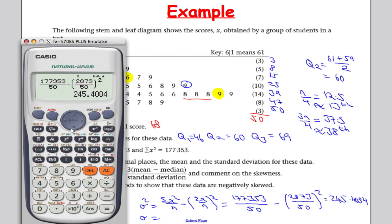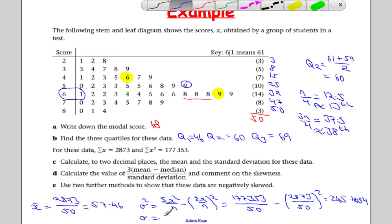And to get the standard deviation, we need to take the square root of the variance. So I'm just going to hit square root of my answer, and that gives me, to two decimal places, 15.67.